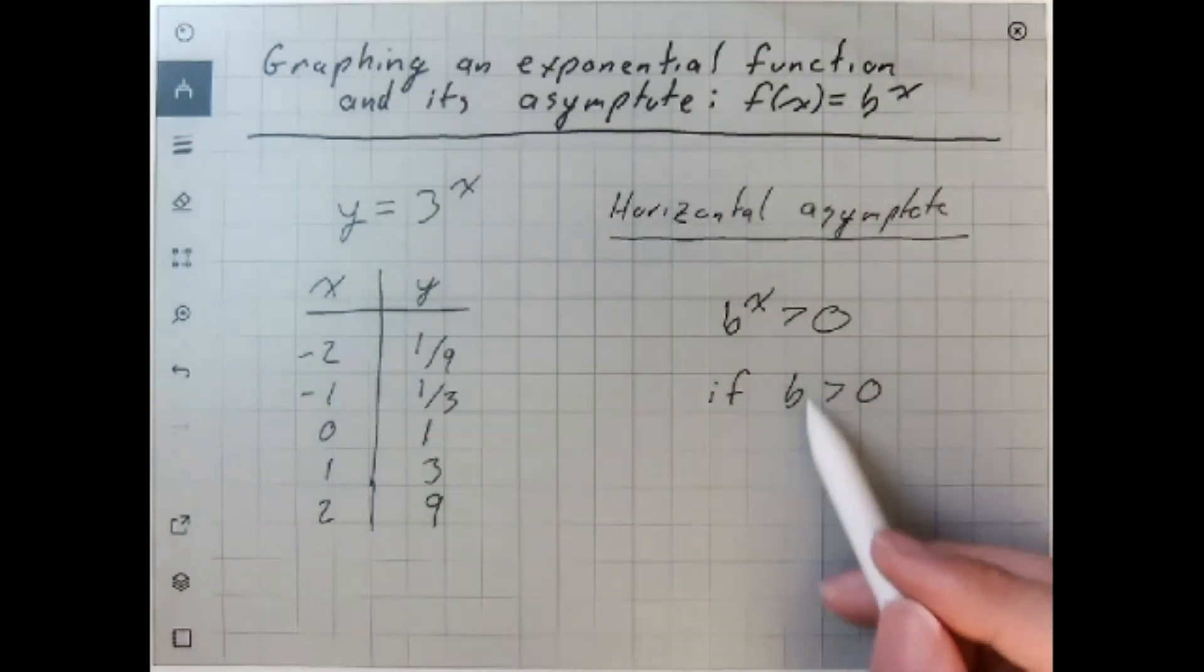If you take any positive number and multiply it times any other positive number, your result is going to be a positive number.